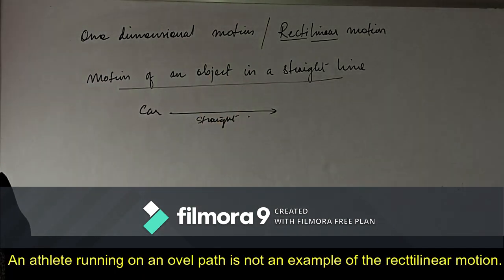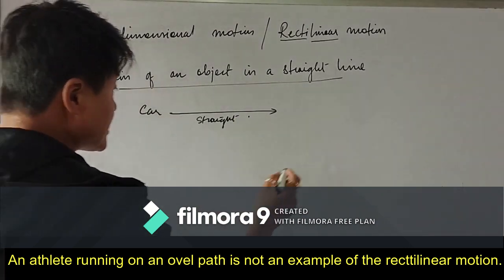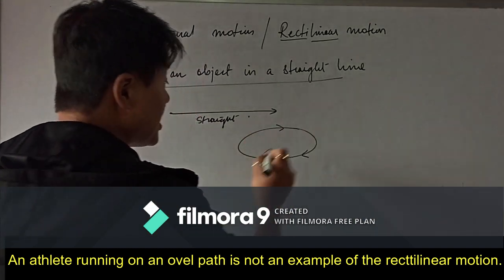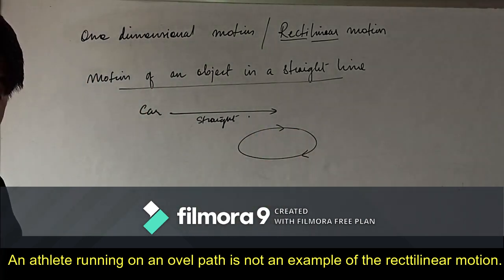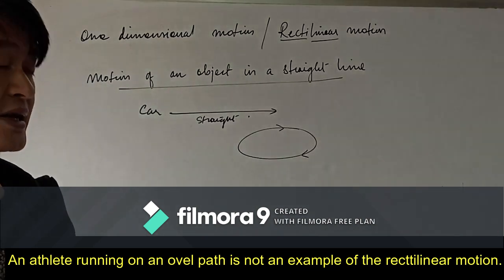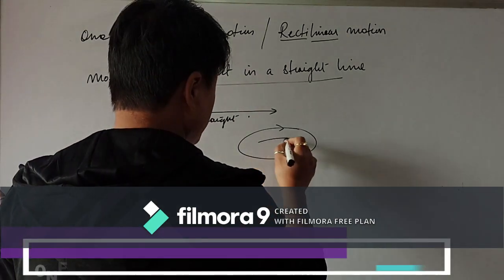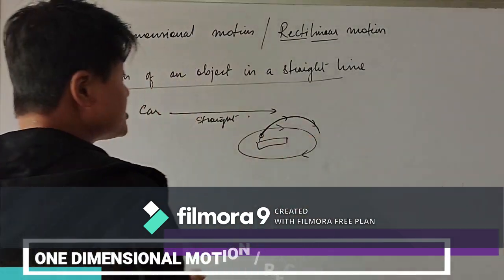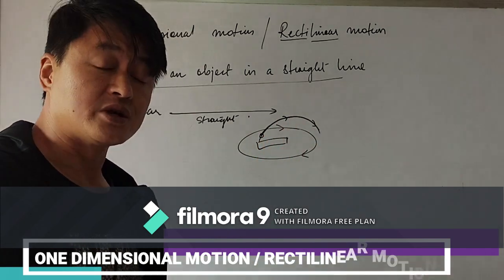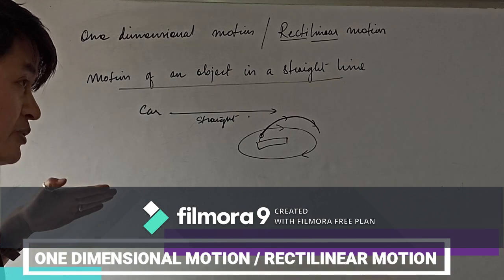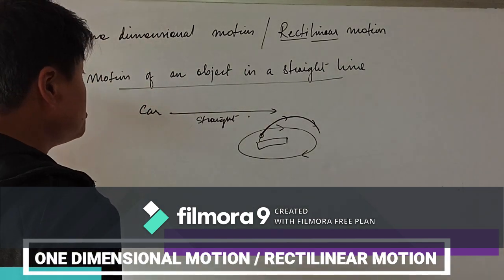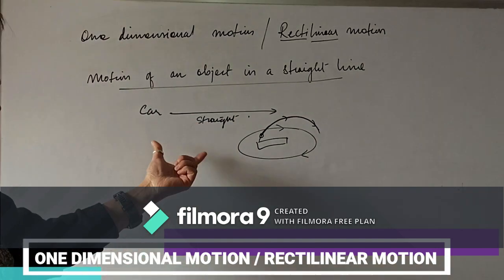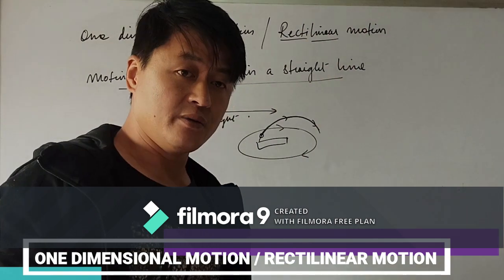If athletes run on an oval path, that is not rectilinear motion because they are not traveling in a straight path. Similarly, when a batsman hits a six in cricket, the ball follows a curved path — not a straight line — so that is also not an example of rectilinear motion. Only motion along a straight line qualifies as rectilinear or one dimensional motion.